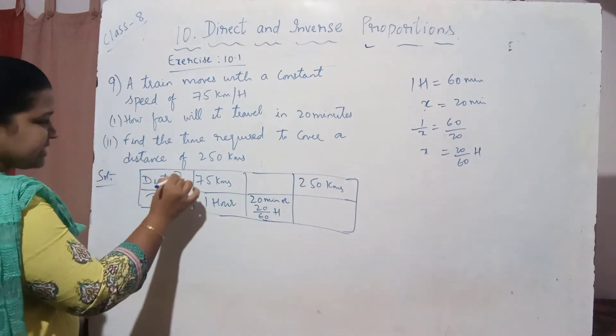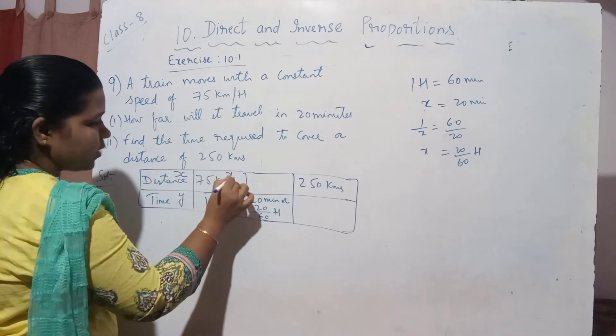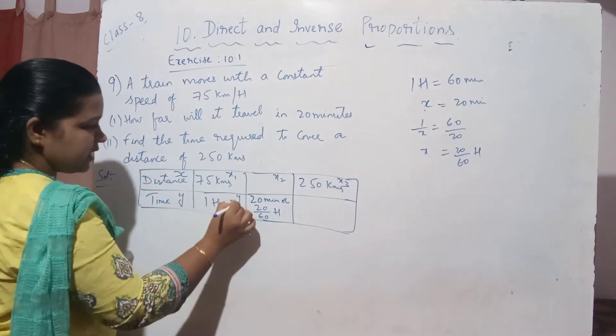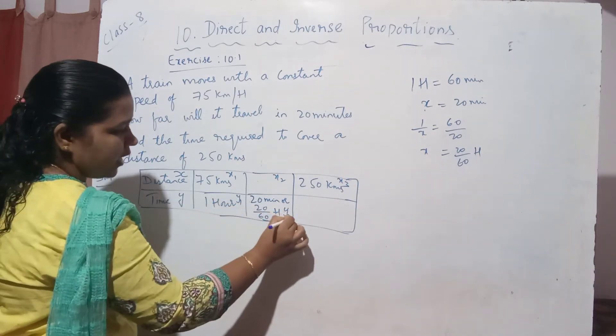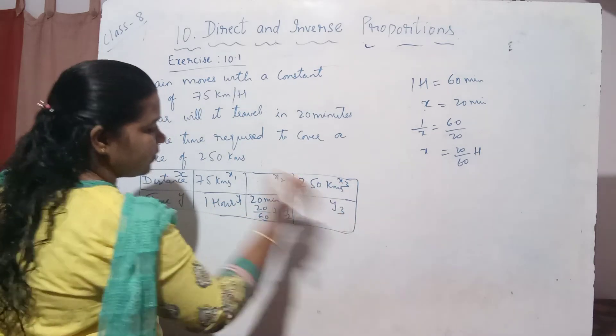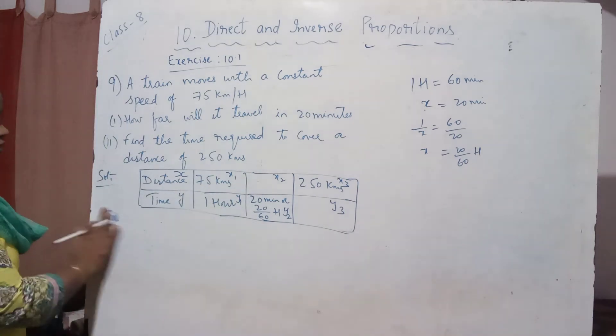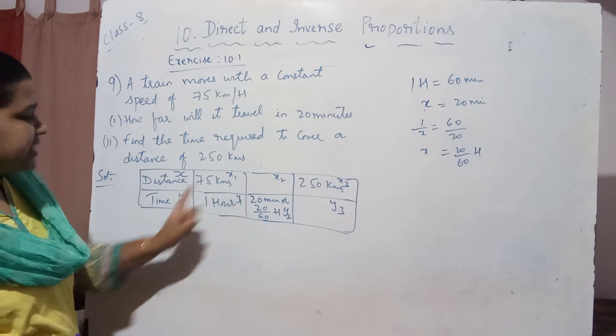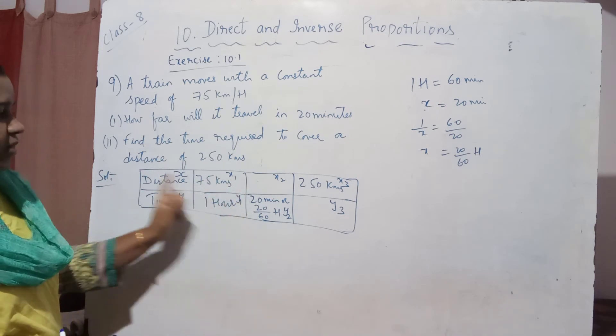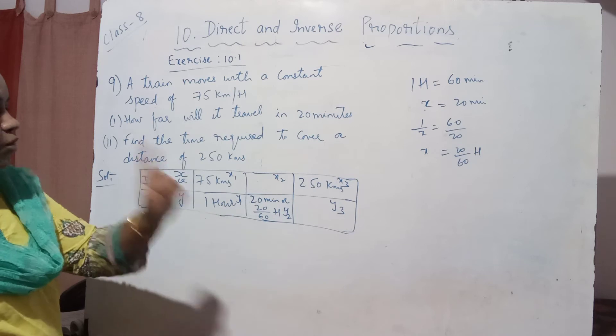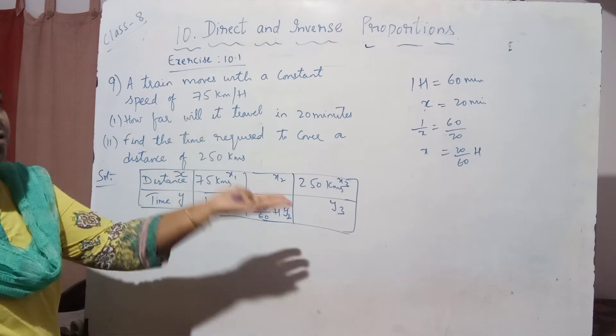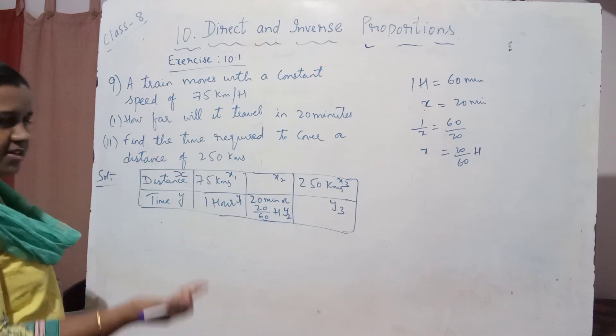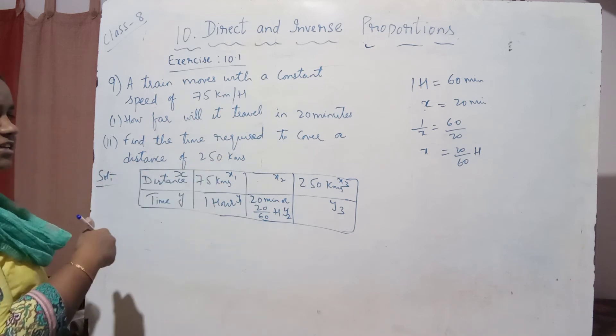If I take this as x, this as y, this becomes x1, this is x2, and this is x3. If I take this as y, this becomes y1, y2, and y3. Because this is in direct proportion, as the distance is increasing, the time also will increase. When traveling, if 10 kilometers takes 1 hour, then 20 kilometers will take 2 hours. As the distance increases, time also increases. And as distance decreases, time also decreases.